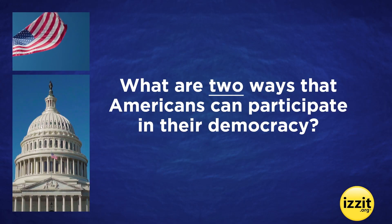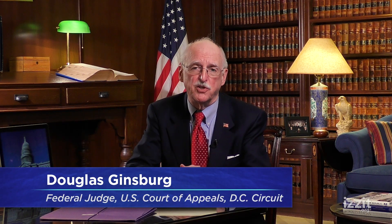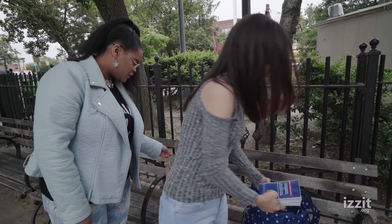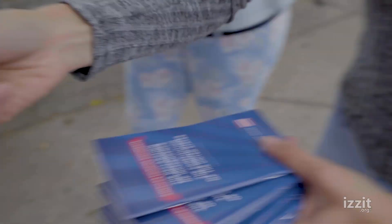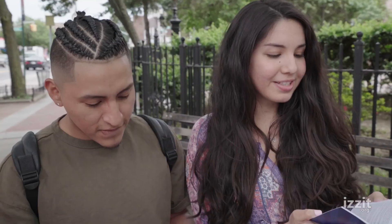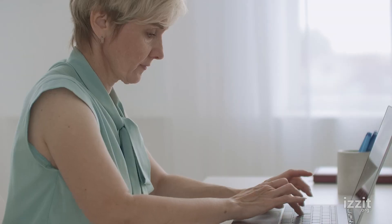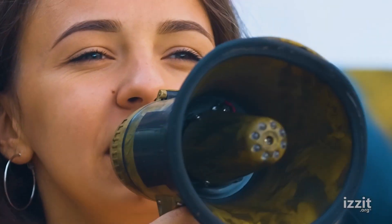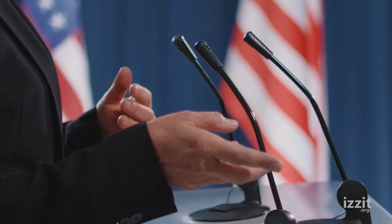What are two ways that Americans can participate in their democracy? There are lots of ways to participate in the civic life of the republic. For starters, you can exercise your First Amendment right of free speech, write a letter to the editor about an issue, and sound off to your elected officials, or volunteer with a political campaign.